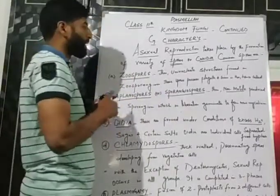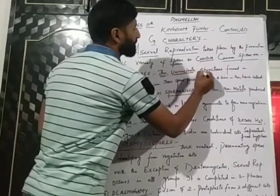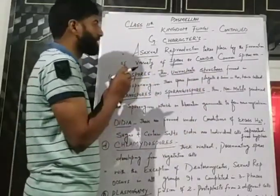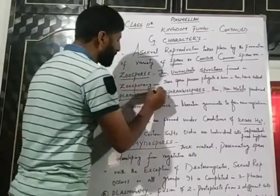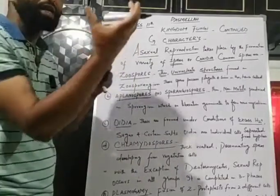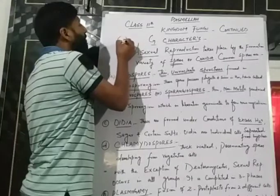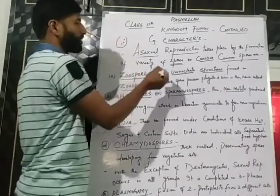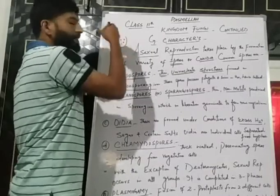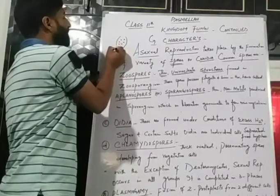The first type is zoospores. Zoospores are thin, uninucleate structures. They are formed inside a sac-like structure and are uninucleate.